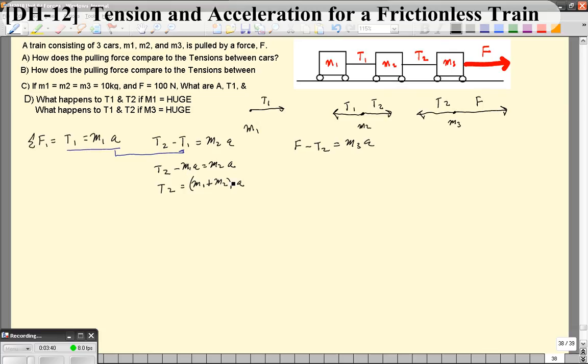Remember, we like to get the A's factored out if possible. Now I'm going to take this tension two, and I'm going to plug it in here. And we're going to get force minus (M1 plus M2)A equals M3A. Now, when I bring this over to the right side, this is the same as adding M1A and adding M2A. When we factor out the A,